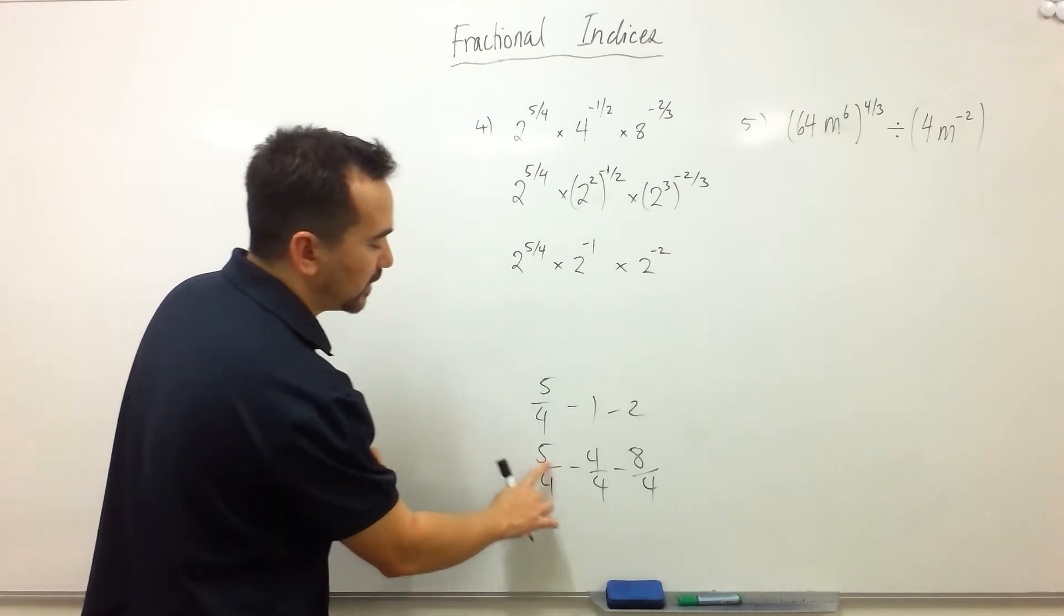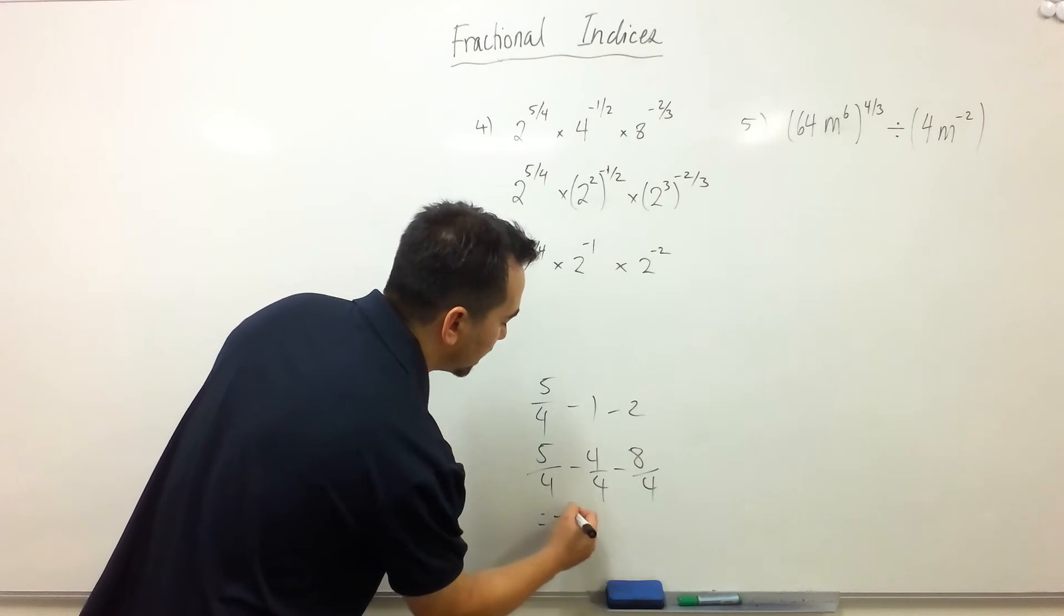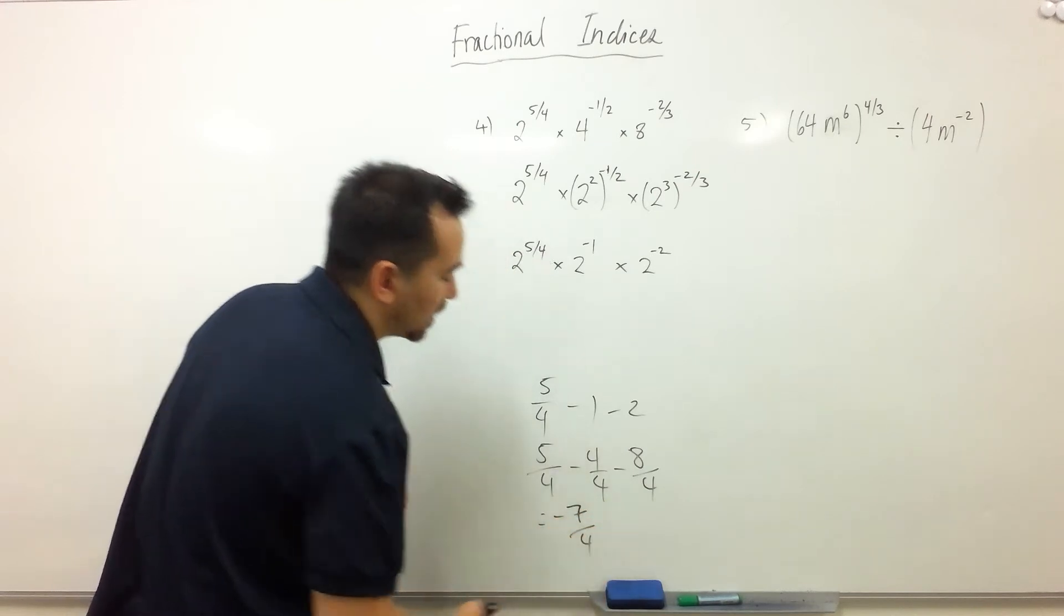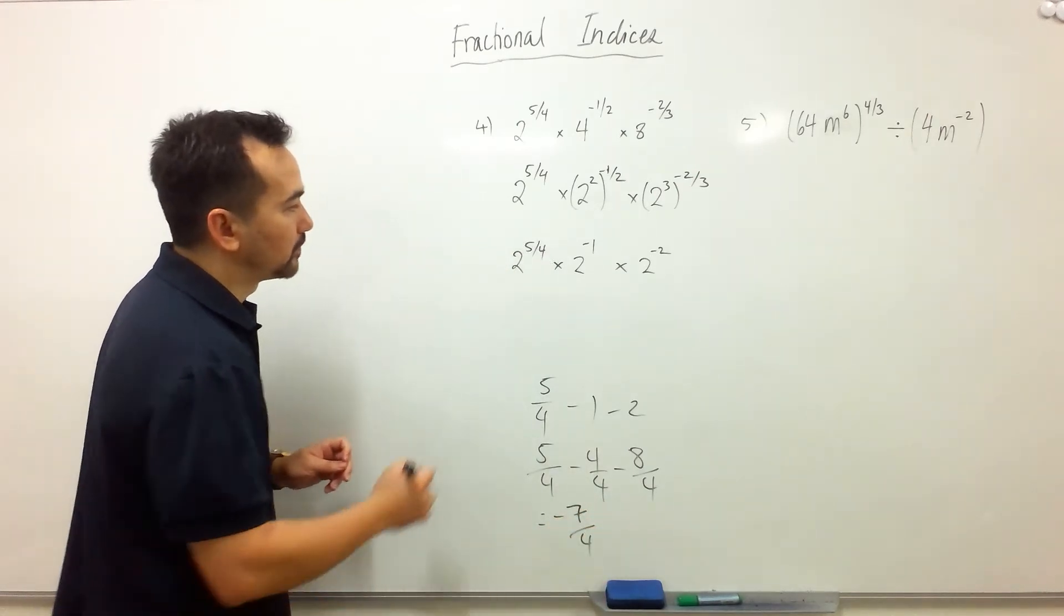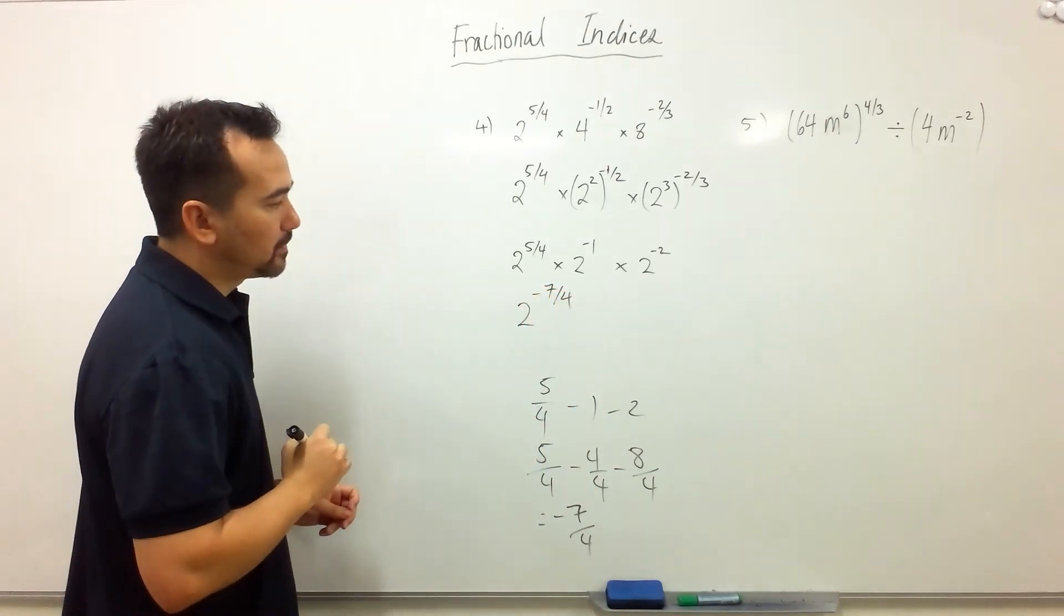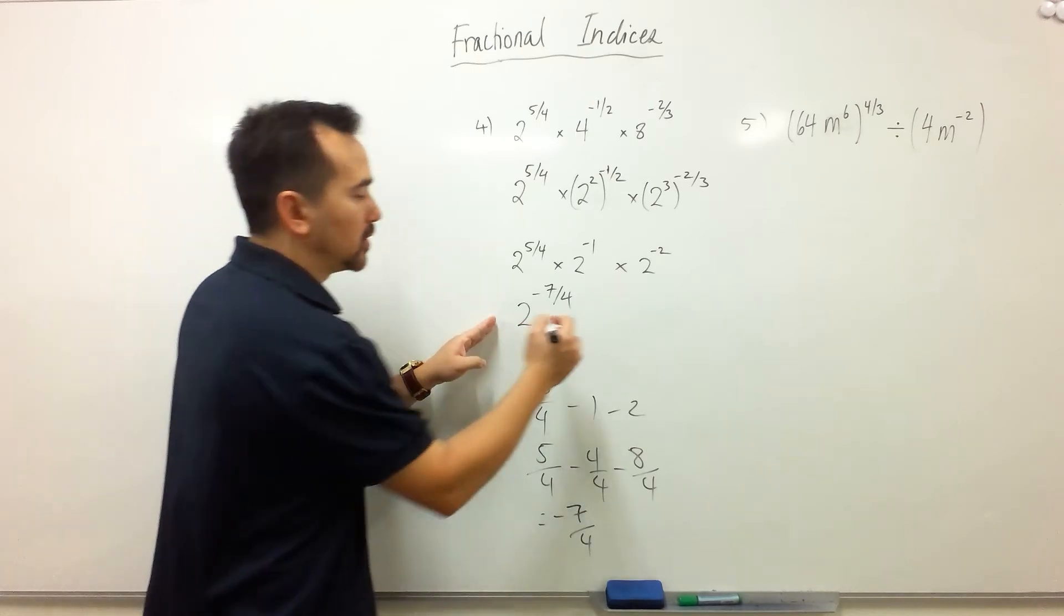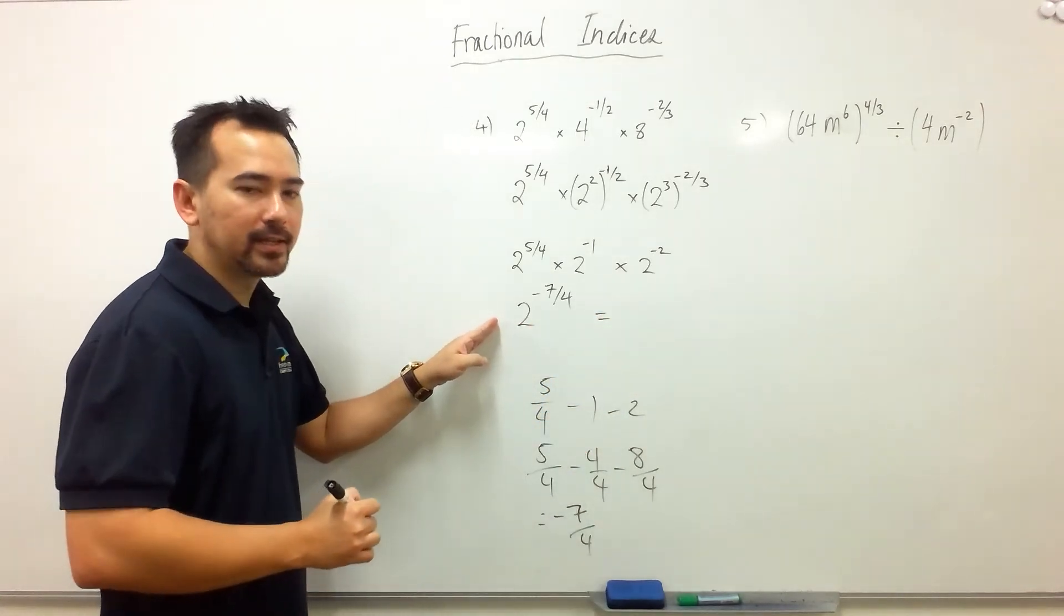So 5 take away 4 is 1 and 1 take away 8 is negative 7. So this will come to negative 7 on 4, 2 to the power of negative 7 on 4 and this is how you'd write it in exponent form. I'm going to show you how you would write it in third form.